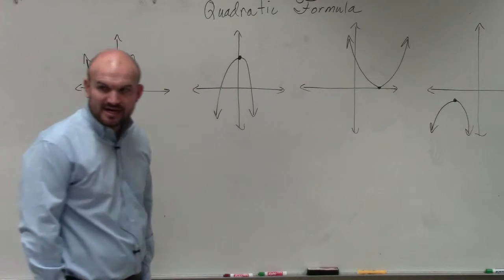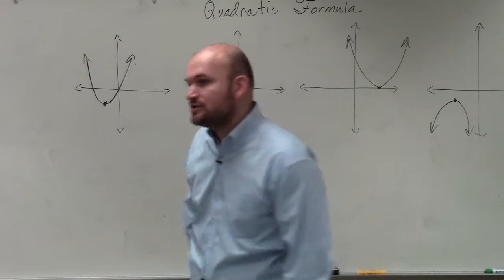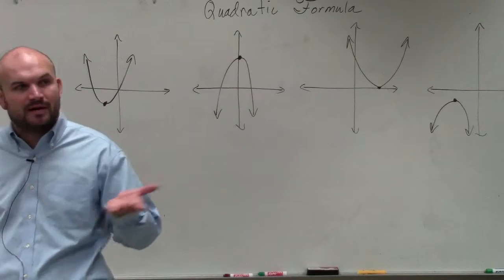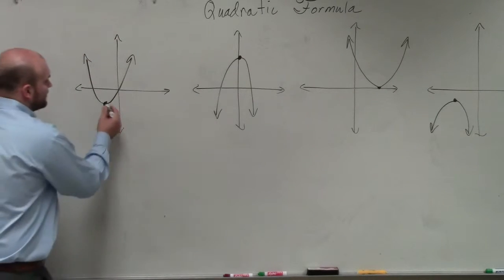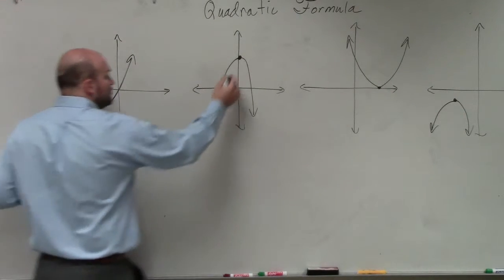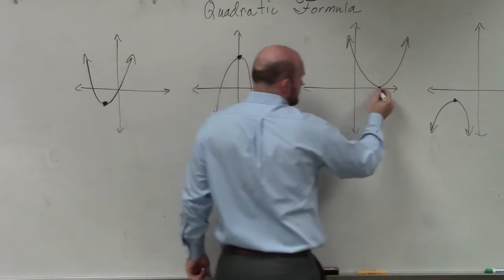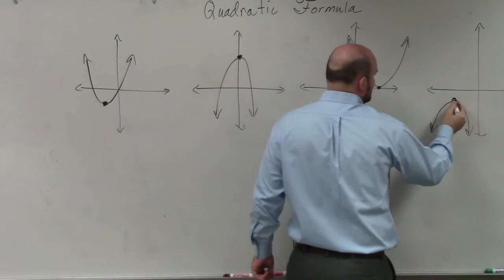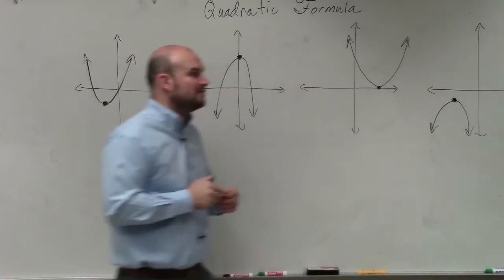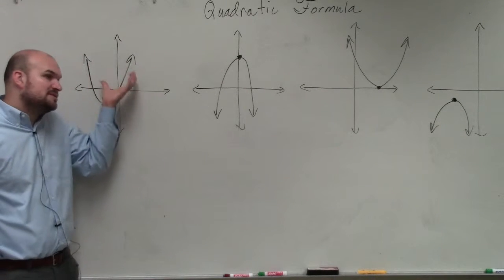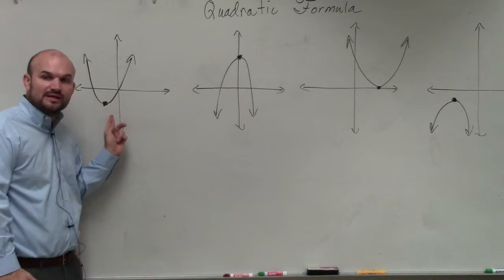Then there's a couple other things that we looked at in the characteristics. And one of the main characteristics that we looked at or that we were worried about last unit was this point, which we call the vertex. And what was important about the vertex is when the graph opens up, that vertex was the minimum point, right?